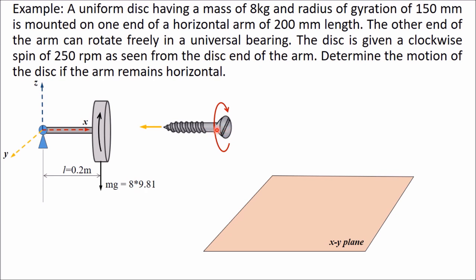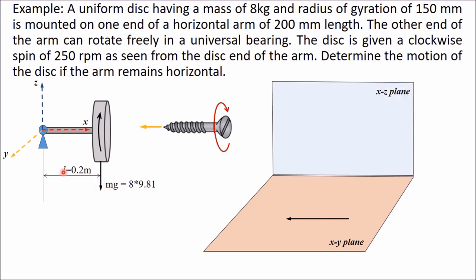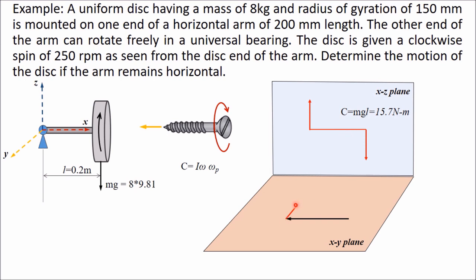Because of the weight of the disc, a couple mg×L acts in the XZ plane in the clockwise direction. Using the right-hand screw rule, this couple acts as a vector in the forward direction. Its magnitude is mg×L = 8×9.81×0.2 = 15.7 N·m. This couple equals the gyroscopic couple Iωωp, so the axis will also rotate with angular velocity ωp, which we need to determine. The final angular momentum vector points in the new direction, which tells us the shaft will rotate clockwise when viewed from the top.